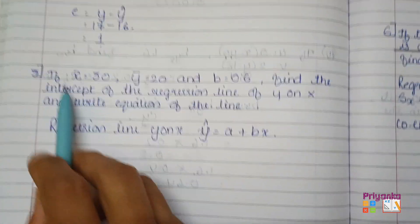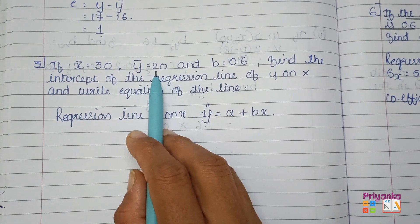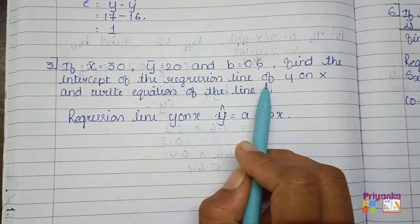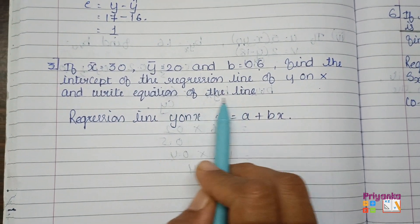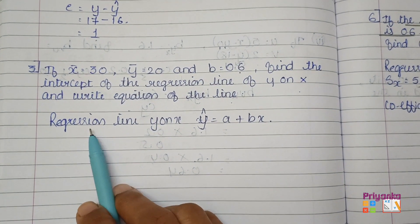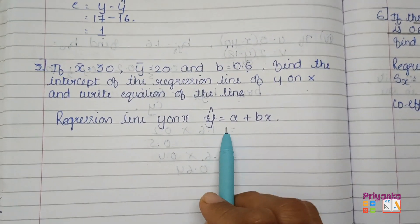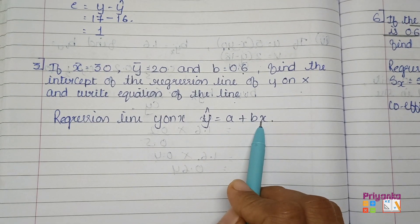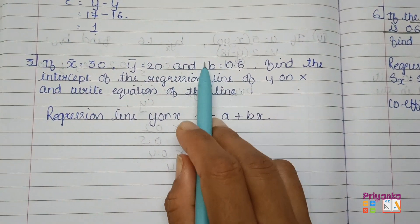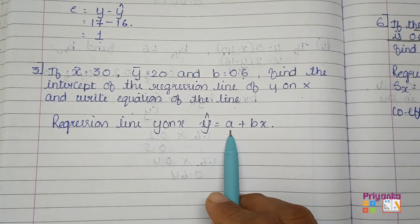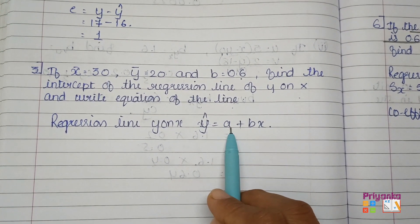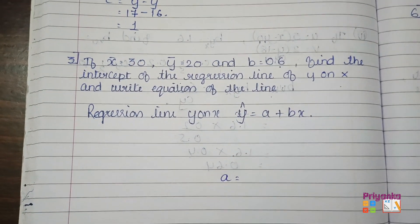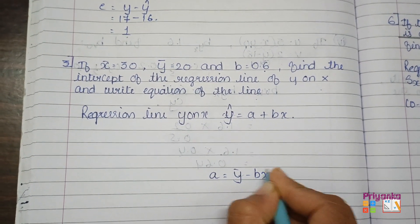Question 3: if x-bar equals 30, y-bar equals 20, and b equals 0.6, find the intercept of the regression line of y on x and write the equation of the line. The regression line formula is y-cap equal to a plus bx. We have b but not a, so we use the formula a equals y-bar minus b times x-bar.